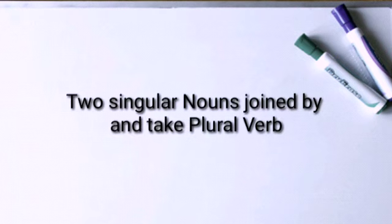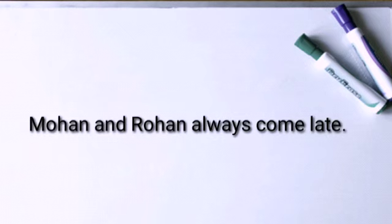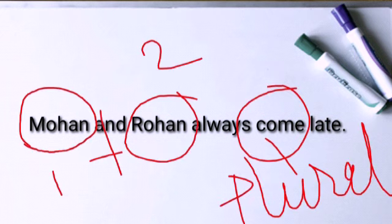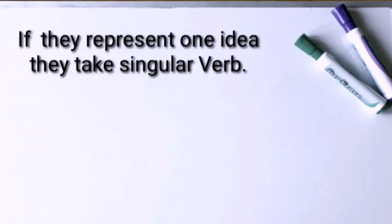When two singular nouns are joined by 'and,' they always take a plural verb. For example: 'Mohan and Rohan always come late.' In this sentence the two nouns Mohan and Rohan are joined by 'and,' so the following verb is in plural form.